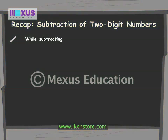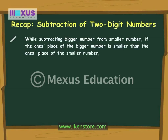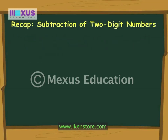While subtracting a bigger number from a smaller number, if the ones place of the bigger number is smaller than the ones place of the smaller number, then borrow 1 from the tens place. Just take a look at this example.